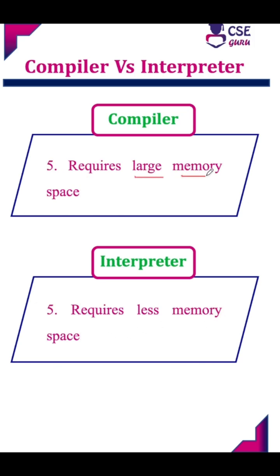In a compiler, it requires large memory space to store the complete source program for processing. But in an interpreter, it takes only line-by-line and requires less memory space.